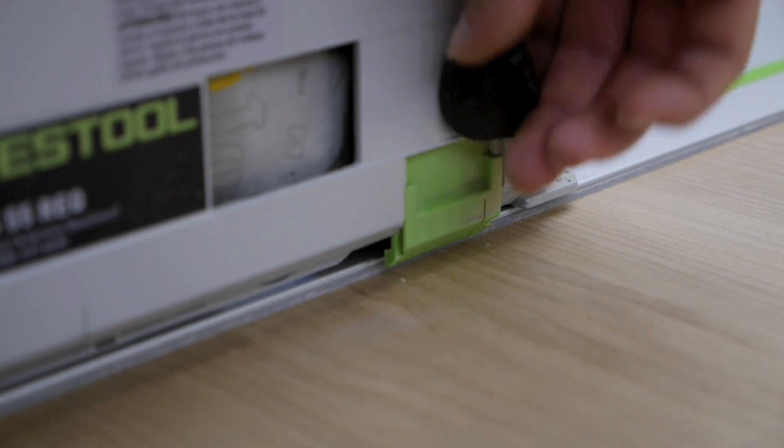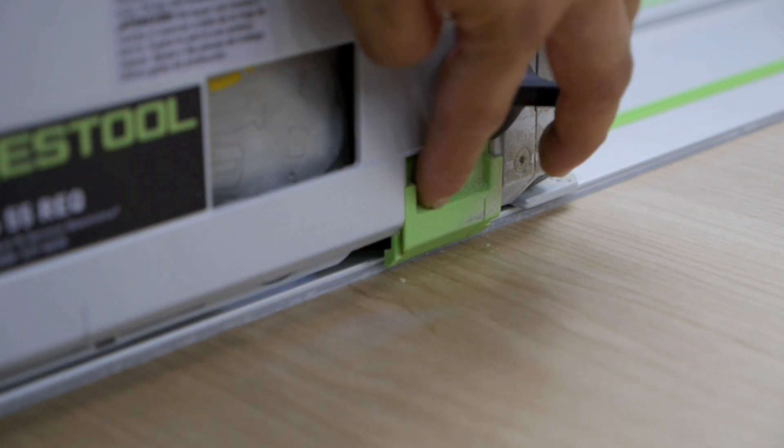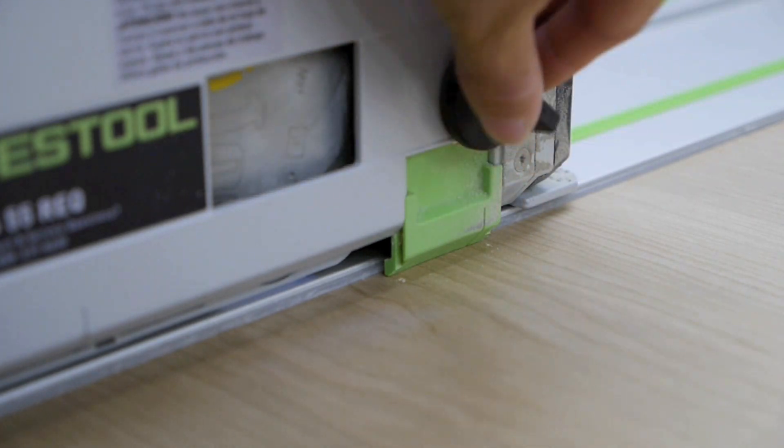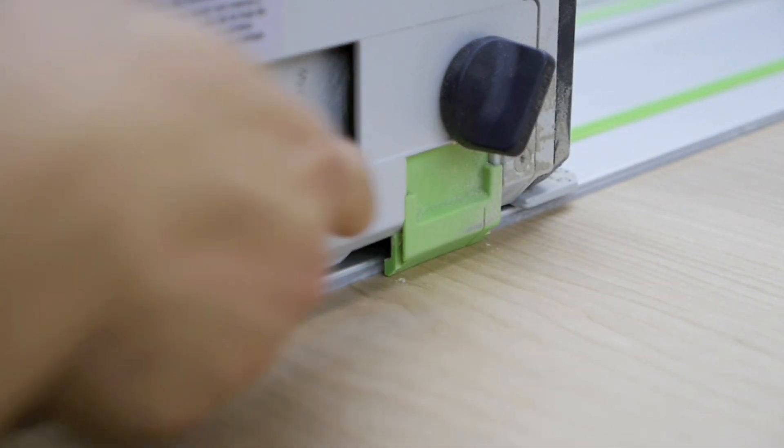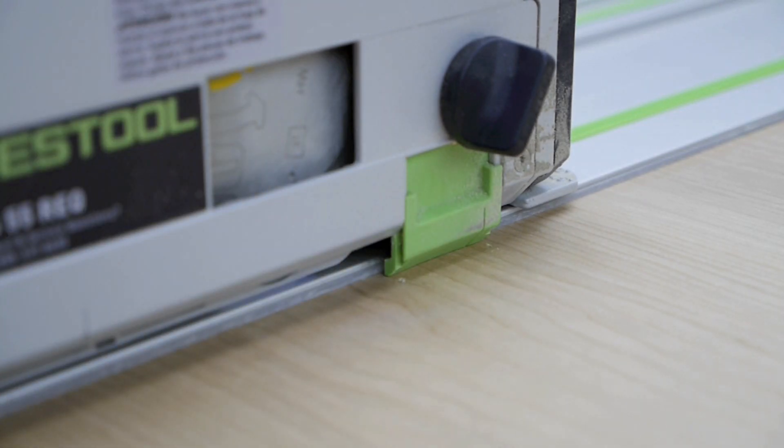For optimal cut quality it's important to set the splinter guard so that it's flush with the surface of this plywood. And that's going to keep the off cut side from tearing out.